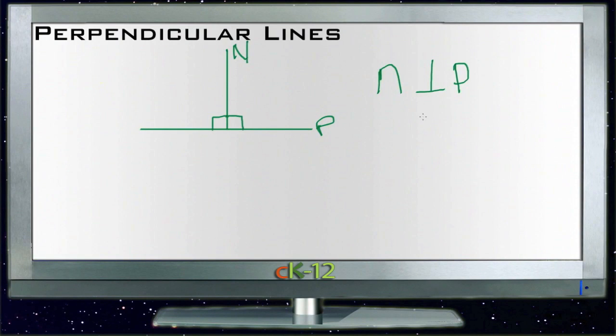If we know that line N is perpendicular to line P, and that line M is parallel to line N, then we also know that line M is perpendicular to line P.